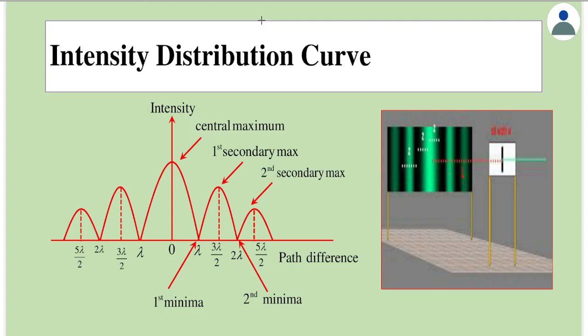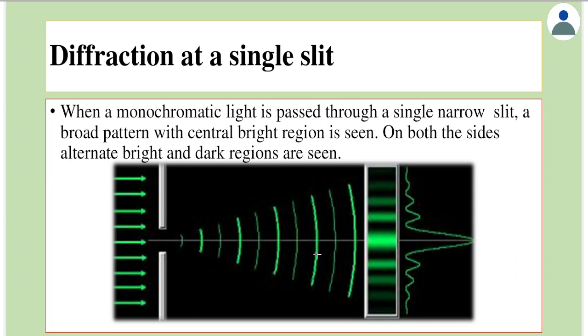Let us now look at the intensity distribution curve in the case of diffraction. To understand this, let's recall the single slit experiment where we had a small narrow opening through which light was passing.